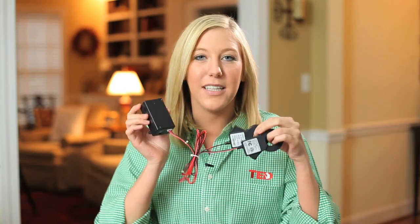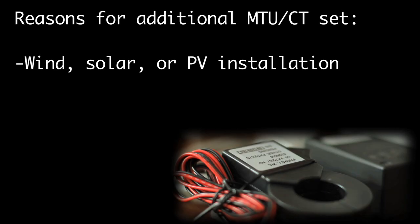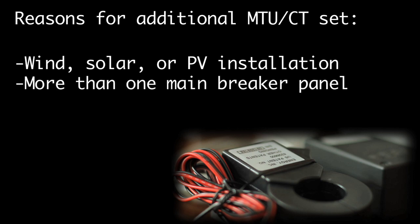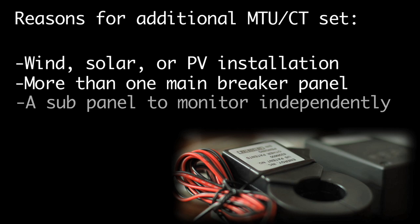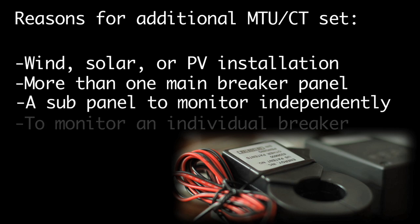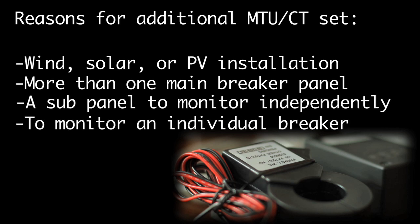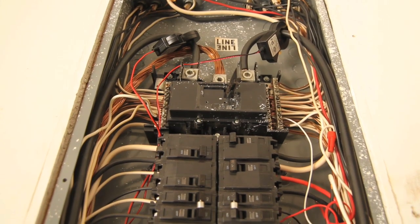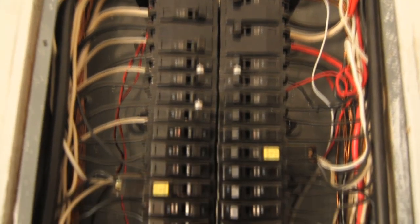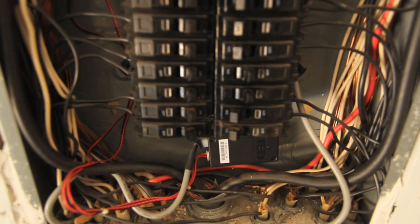Welcome. This video assumes that you've just watched our basic installation video. This specific video is designed to help you install an additional MTU and CT set. You may be using an additional MTU and CT set for several reasons: you may have a wind, solar, or PV installation that you'd like to monitor, more than one main breaker panel, a subpanel to monitor independently, or you may be trying to monitor an individual breaker. This video assumes that you have already installed your first MTU and CT set on the main conductors of the main breaker panel.